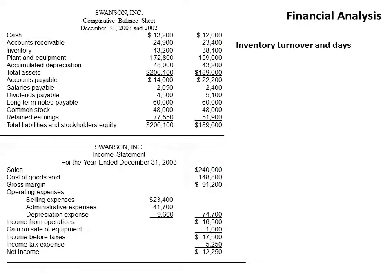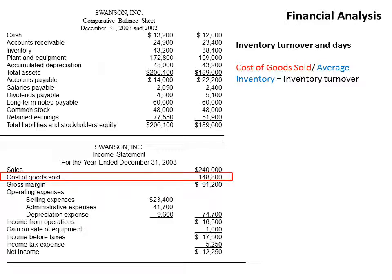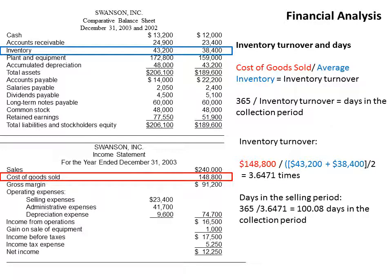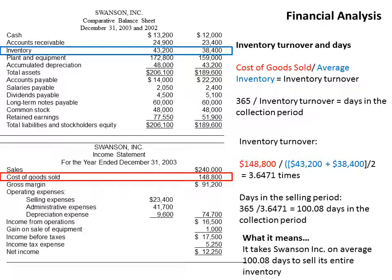Next is inventory turnover — how quickly does the company turn over its inventory? We take cost of goods sold divided by average inventory. Cost of goods sold from the income statement is $148,800. Average inventory is ($43,200 plus $38,400) divided by two. That gives a turnover of 3.64 times. Dividing 365 by the inventory turnover gives the days in the turnover period — in this case, it takes them about 100 days to sell their entire inventory. For a store like Target or Walmart, that's a very impressive number.